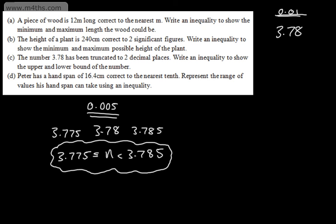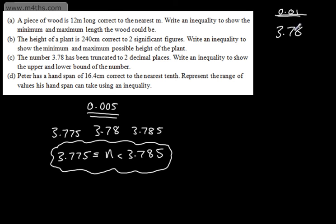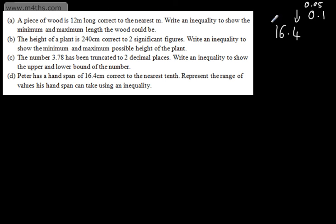Let's do the last one. Peter has a hand span of 16.4 centimetres, correct to the nearest tenth. We're asked to represent the range of values his hand span can take using an inequality. This is to the nearest 0.1. We split 0.1, which gives 0.05 — quite similar to the last one where 0.01 gave us 0.005. So for 16.4, we subtract 0.05 to get 16.35 and add 0.05 to get 16.45.